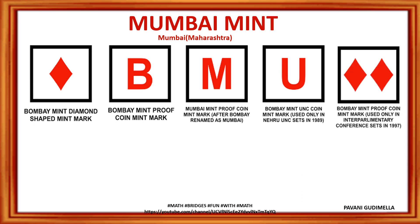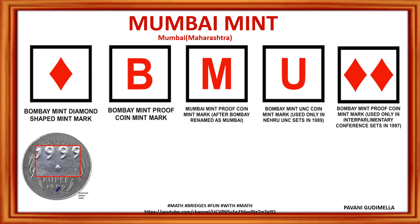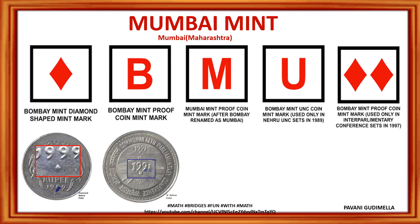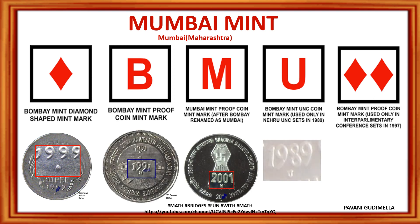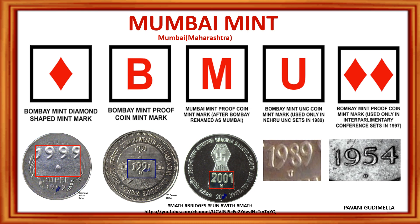Mumbai mint has different symbols. It can be a diamond, the letter B, the letter M — the name was changed from Bombay to Mumbai, so they changed it to M — the letter U, or two diamonds. For example, a 1999 one-rupee coin has one diamond, meaning it was made at Mumbai mint. Other coins from 1991, 2001, 1989, and 1954 also show Mumbai mint symbols.